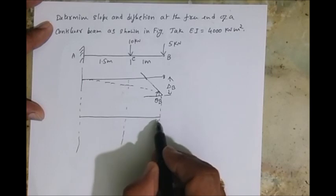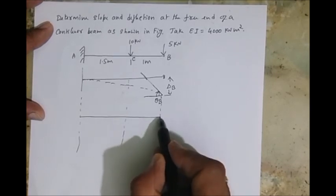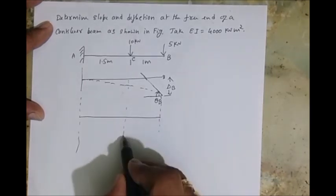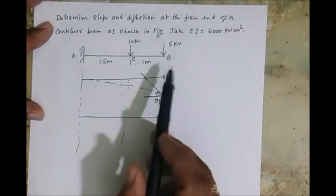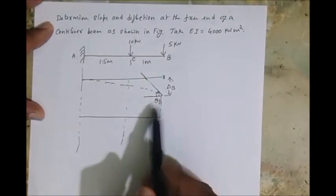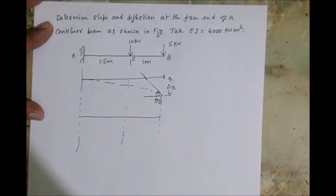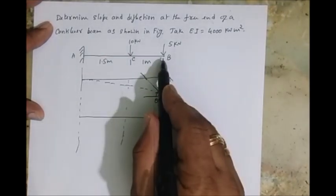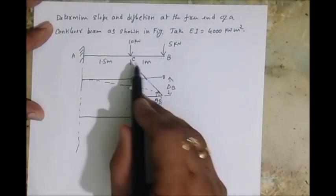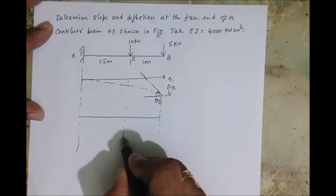So how is the bending moment diagram now for the cantilever beam? Moment at B is zero. Now the moment at C is because of this five kilonewton load, so it is five into one, which is five. It's linearly increasing.